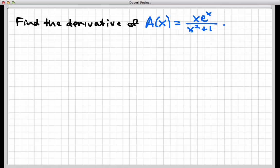Hi there, and welcome to this screencast where we're going to do an example of computing a derivative where several rules are being combined at once. In particular, both the product rule and the quotient rule are gonna show up here.